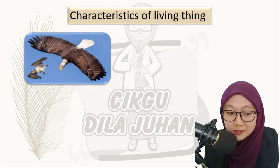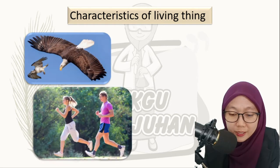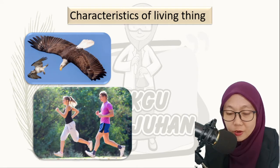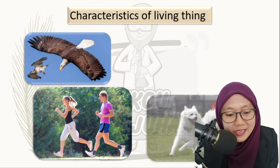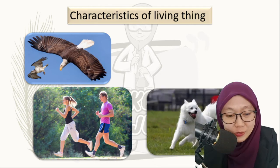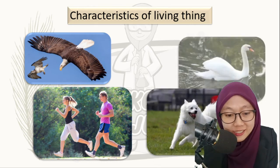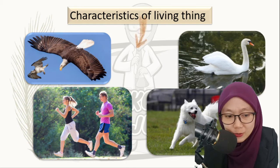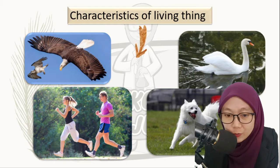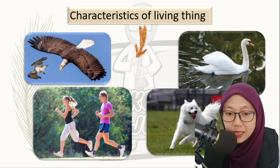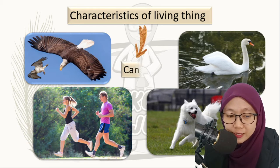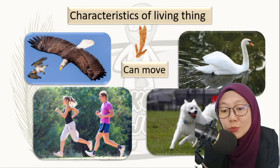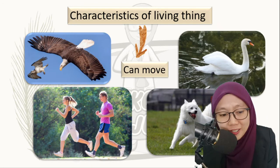The third characteristic of living things — you can see there is an eagle and a bird, a man and a woman jogging or walking, and also a dog running and a duck swimming. From this we can conclude that living things can move.